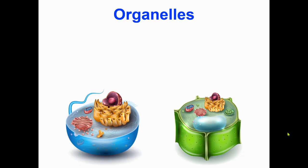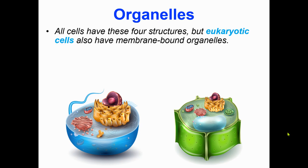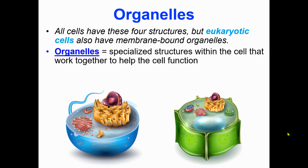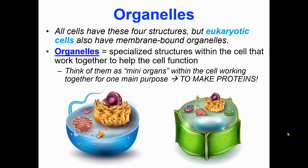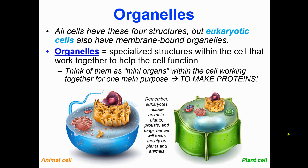Let's focus on the organelles — the smaller parts of a cell. All cells have those four structures: genetic material, cytoplasm, cell membrane, and ribosomes. But if you're a eukaryotic cell, you also have membrane-bound organelles. Organelles are specialized structures within a cell that work together to help the cell function — think of them as mini-organs, working together for one main purpose: to make protein. We have an animal cell and a plant cell here. Remember, eukaryotic cells include plants, animals, protists, and fungi, but we're going to focus mainly on plants and animals.